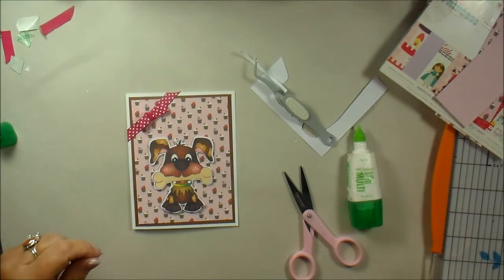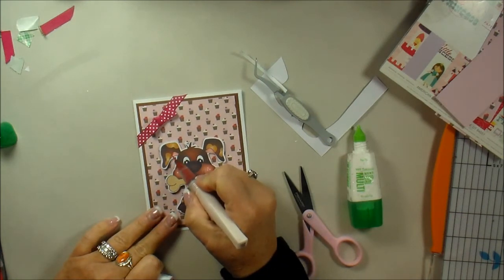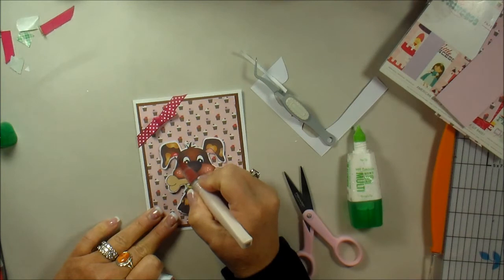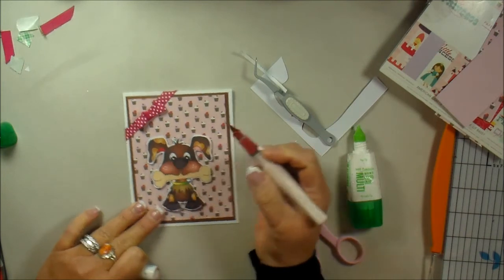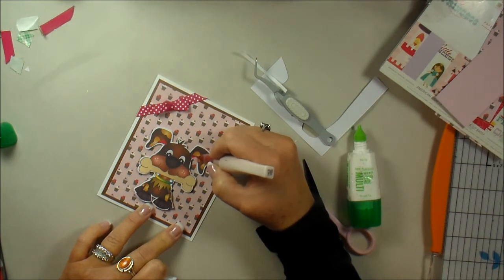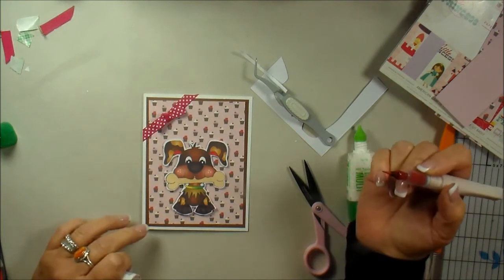I'm gonna take my pink Wink of Stella, give it a shake and I'm gonna come in here and make the inside of his ears sparkly and a little bit darker of a pink. If you have the clear Wink of Stella and you just want to highlight the normal pink color that he has, you can do that. Clear is fine, I just wanted it to be a little different.